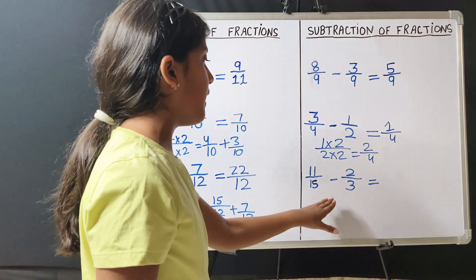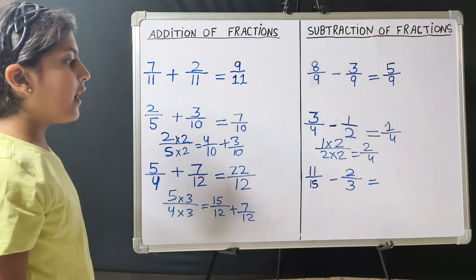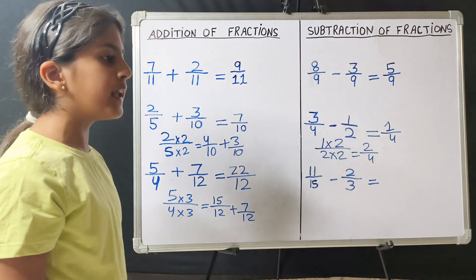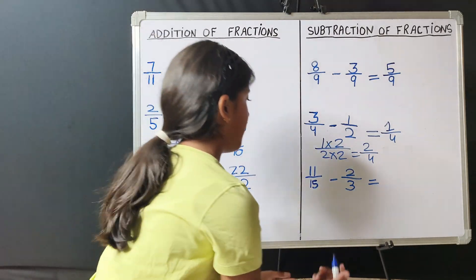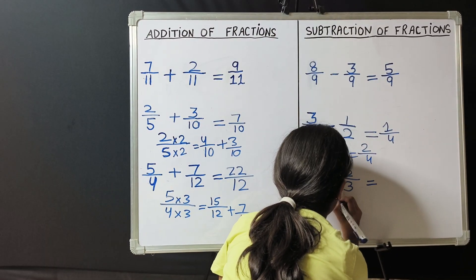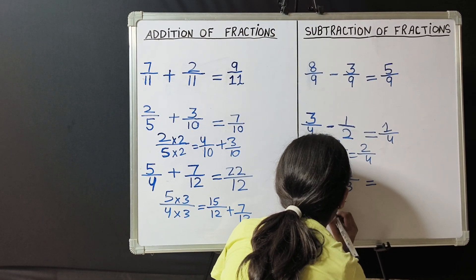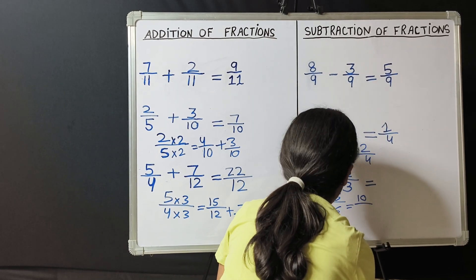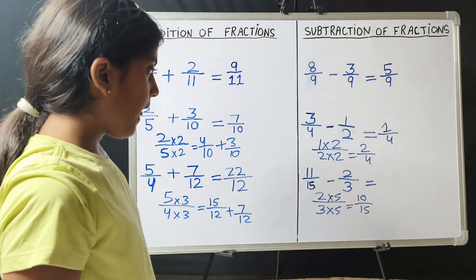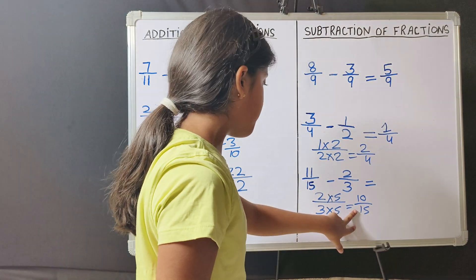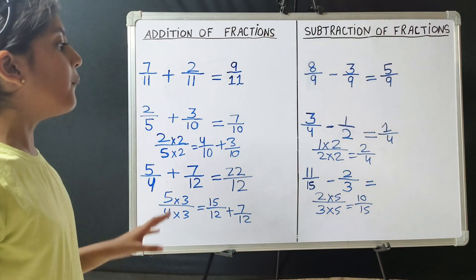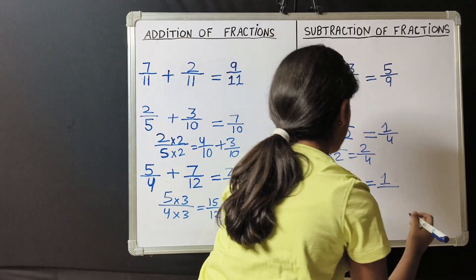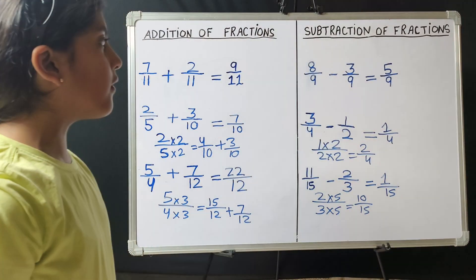So, 11 upon 15 minus 2 upon 3. Here the denominator is 15 and here the denominator is 3. Now, 3 multiplied by what will give you 15? 5. So, 2 multiplied by 5 and 3 multiplied by 5. So 2 times 5 is 10 and 3 times 5 is 15. Now we will subtract 10 upon 15 from 11 upon 15. So 11 minus 10 is 1 and we will write this 15 as it is. So 1 upon 15 is the answer.